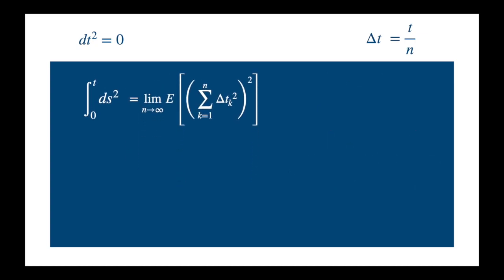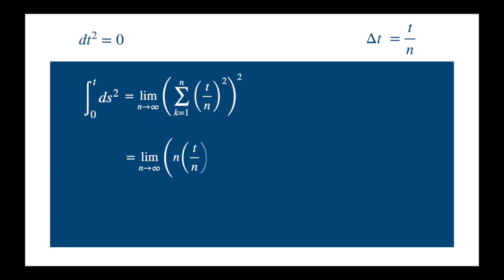Expected value of a deterministic term is the deterministic term. And we can now replace delta t by t divided by n. So we are pretty much back to the deterministic limit, which is reassuring. We just cancel one of the n's. And now as n becomes large, this goes to 0.